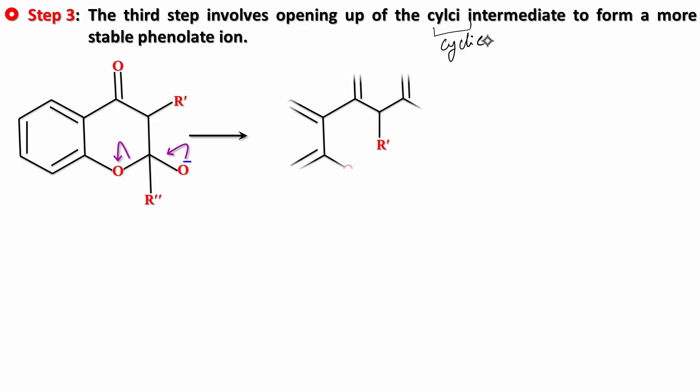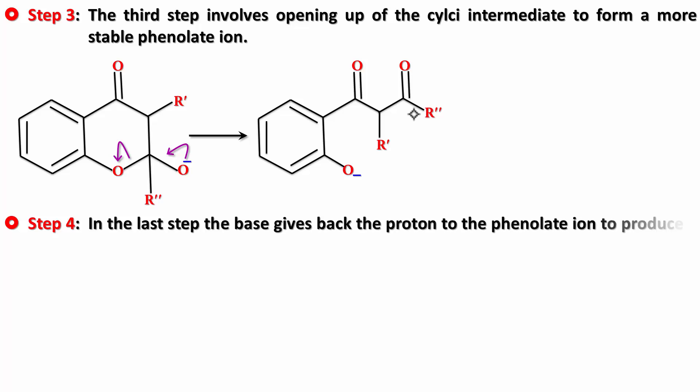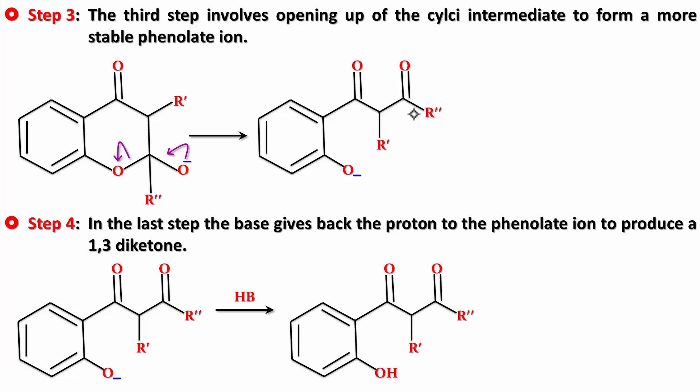A phenoxide ion or phenolate ion is formed, and you can already see the 1,3-diketone forming. In the last step, this picks up the proton that the base took from the carbon. The base gives back the proton to the phenolate ion to produce a 1,3-diketone. This picks up the proton from HB and you get the phenol part.